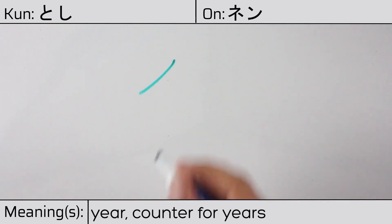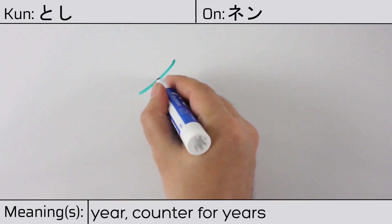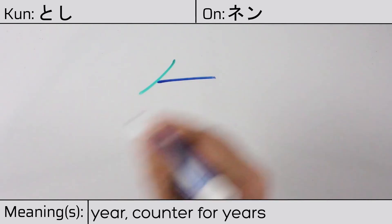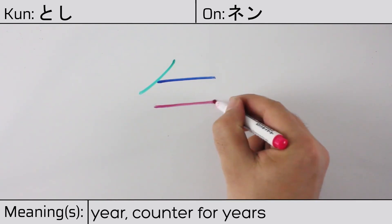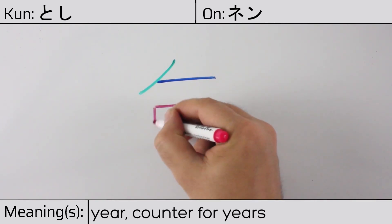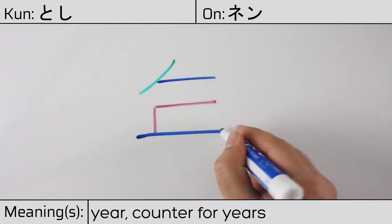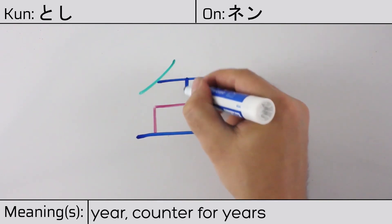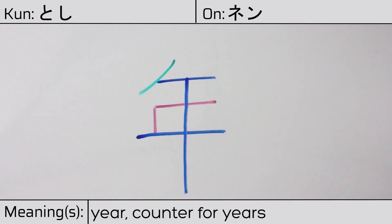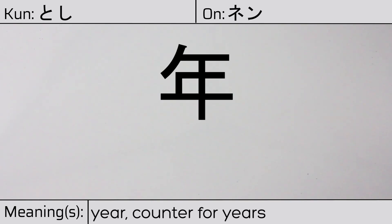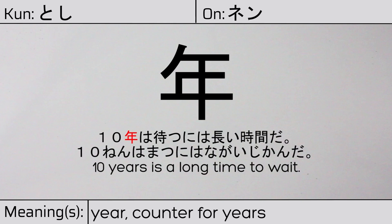This character is made up of the following radicals or parts: katakana no, hoshi meaning to dry or shield, and a strange part in the middle. Our example sentence is: 十年は松には長い時間だ — Ten years is a long time to wait.